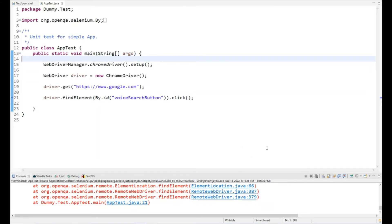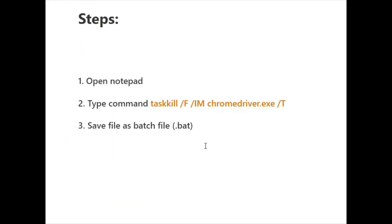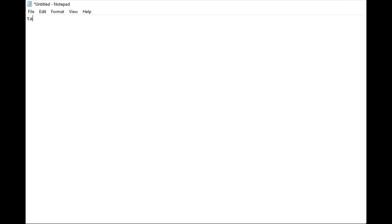Let's move to the steps for creating the batch file. First, open Notepad or Notepad++. Then type the command: taskkill /f /im chromedriver.exe /t. After that, save the file with a .bat extension. I've opened Notepad, so let me type the command — taskkill.